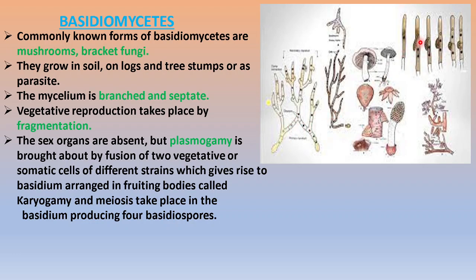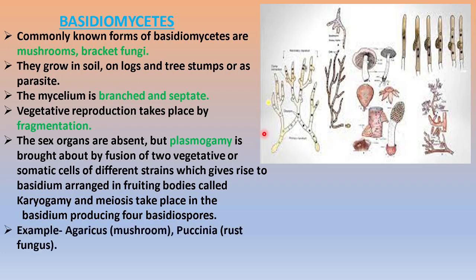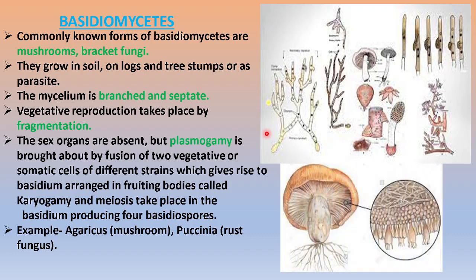Plasmogamy is brought about when two cells fuse together without a separate structure to help; the nucleus of one travels to the other. Then karyogamy takes place, followed by meiosis, giving rise to four basidiospores within the basidium. In mushrooms, the umbrella-shaped structure you see is actually the basidiocarp. Examples include Agaricus — the common mushroom — and Puccinia, which is a disease-causing organism.